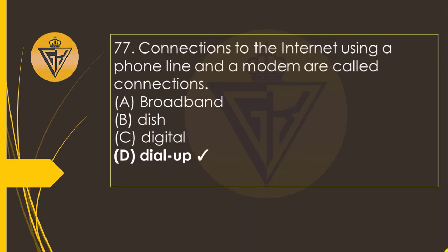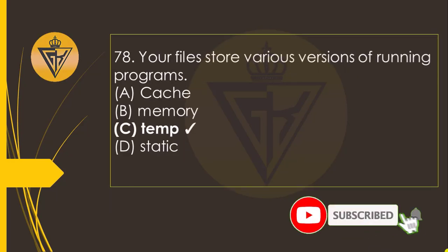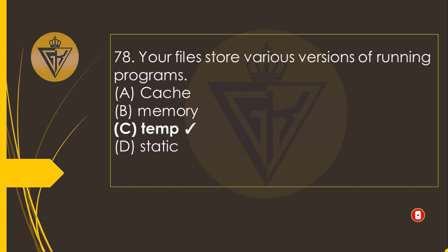Connections to the internet using a phone line and a modem are called the option D: Dial-up connections. Your file stores various versions of running programs — the option C: Temp (temporary).